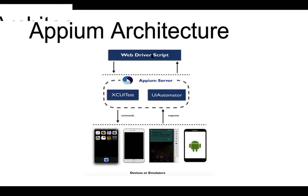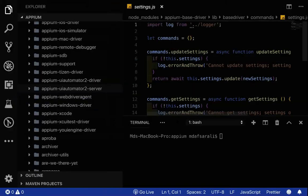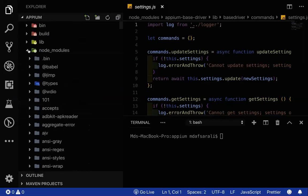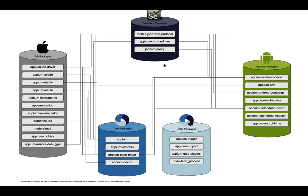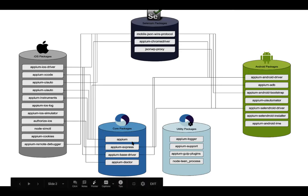Looking at the architecture: the WebDriver script — whether from Postman, Java, JavaScript, or Python — communicates with the Appium server, which checks whether it's Android or iOS. Based on the desired capability, it runs XCUITest or UI Automator accordingly on your device. There's the iOS package, Selenium package, and the core package where Appium Express and Appium base driver reside. Appium Doctor is a separate tool that checks your system requirements.